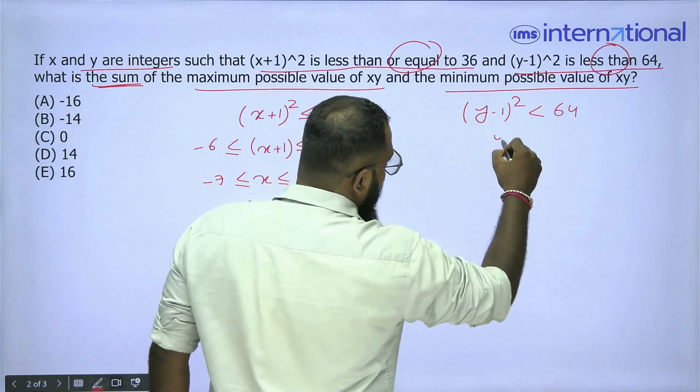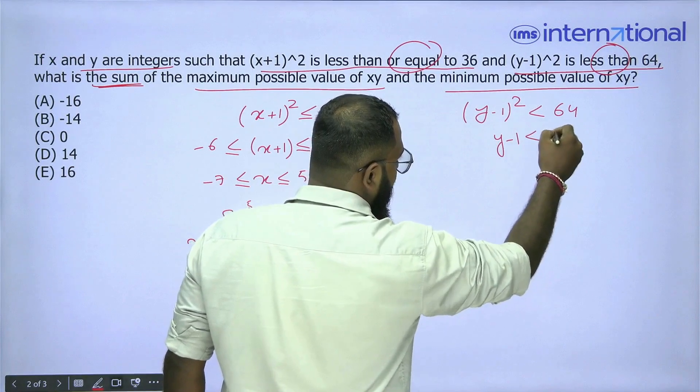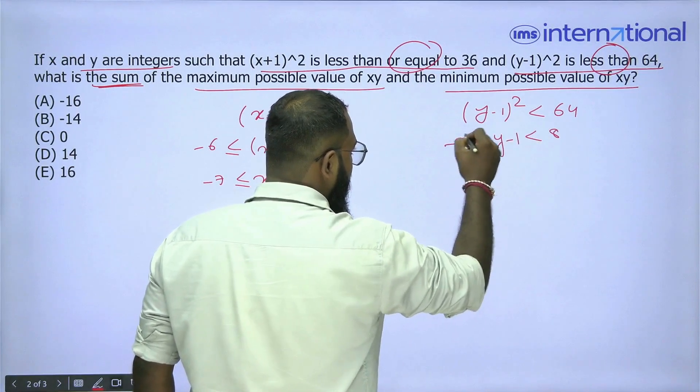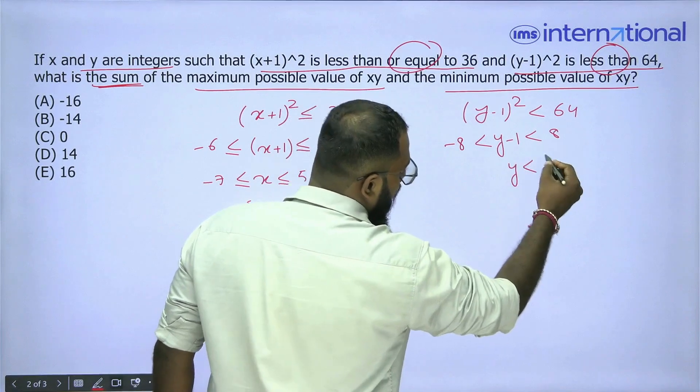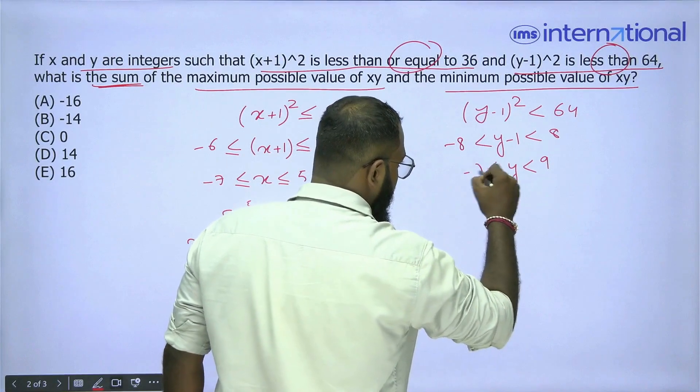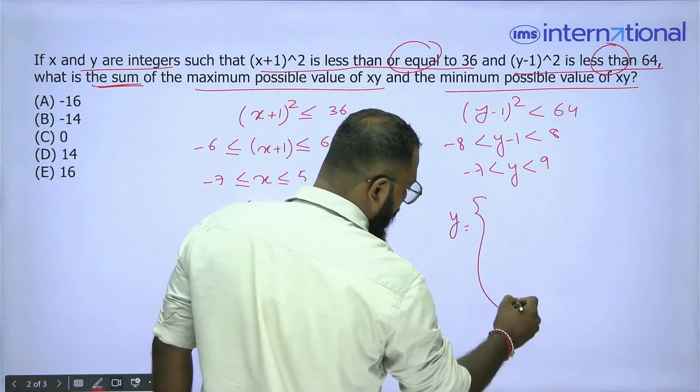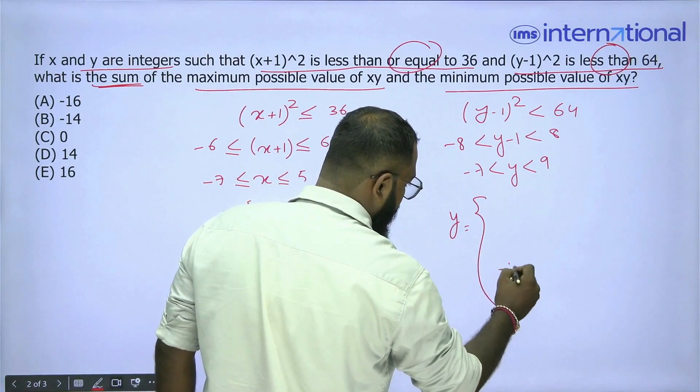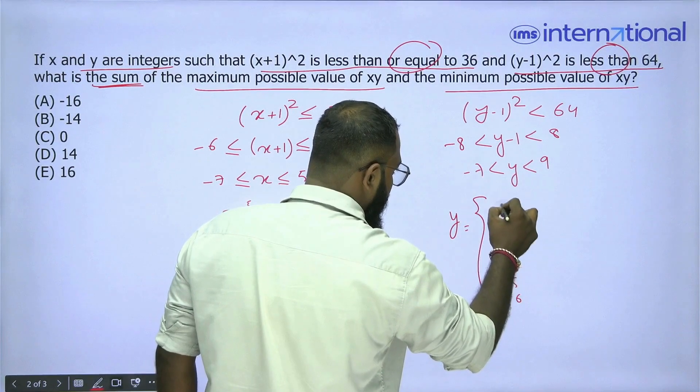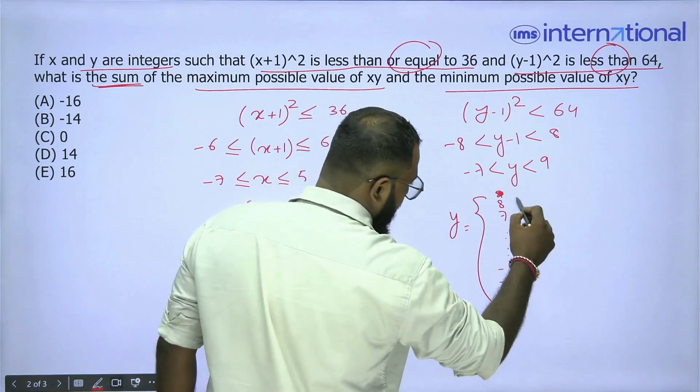If I look at (y-1)^2, then y-1 is going to be less than 8 and greater than -8. So y will lie between -7 and 9. That means y will look like -6, -5, -4, and so on up to 7, 8, and 9. Sorry, I cannot include -7 and 9.